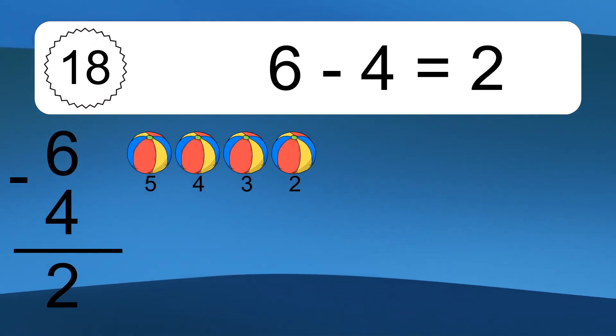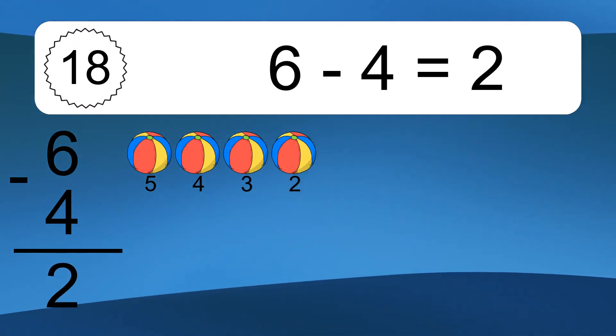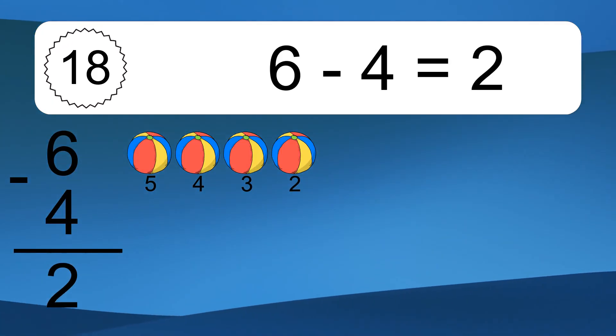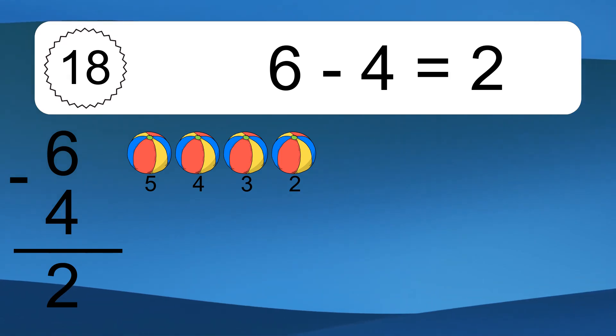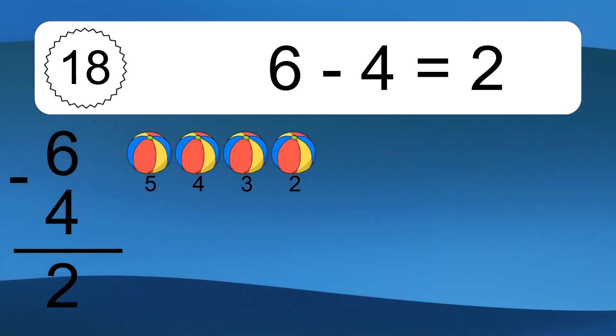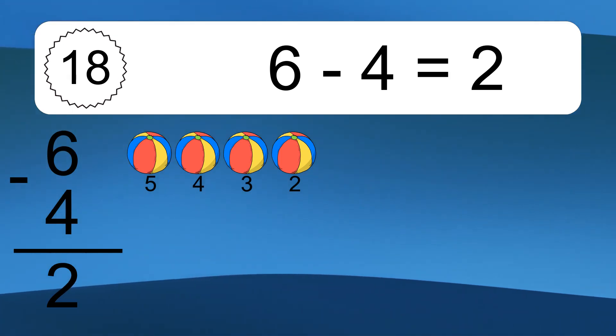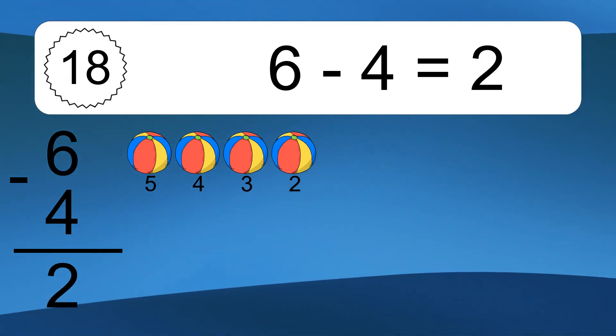6 minus 4 equals 2. Let's count it: 5, 4, 3, 2.